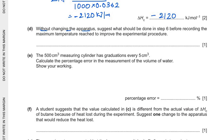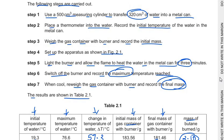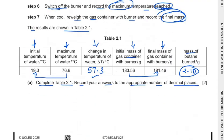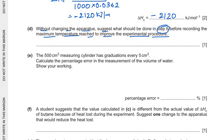Now without changing the apparatus, suggest what should be done in step 6 before recording the maximum temperature reached to improve the experimental procedure. Let's have a look at step 6. What is there is switch off the burner and record the maximum temperature reached after switching off the burner. If we want to record the maximum temperature, we should stir or mix the water thoroughly. And that is what is actually required to get the uniform temperature throughout the water. So the step needed is stir the water before we take the maximum temperature.